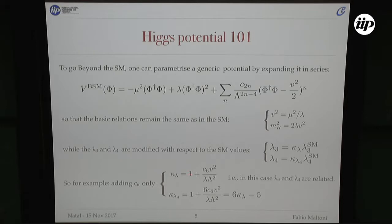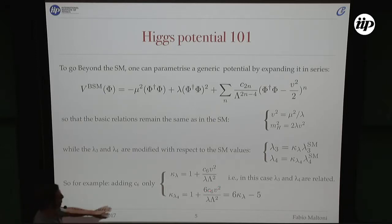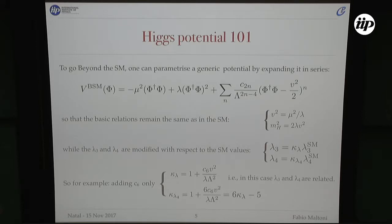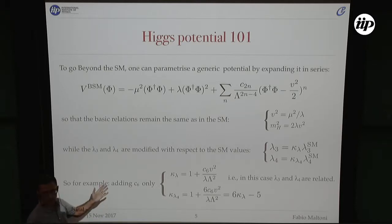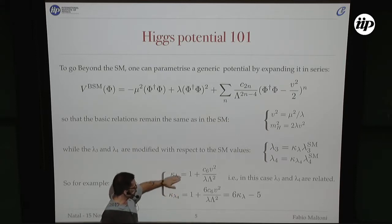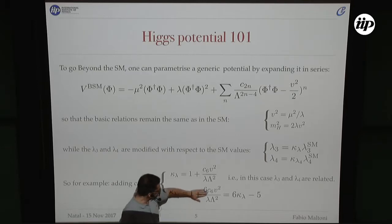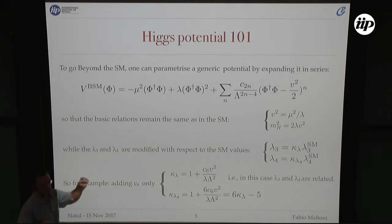If you want to disentangle lambda_3 and lambda_4 independently, you have to add the dimension-8 operator in this scheme. Dimension-8 will not change the dimension-6 relation but will modify lambda_4 separately. Adding a C8 term disentangles the two couplings.